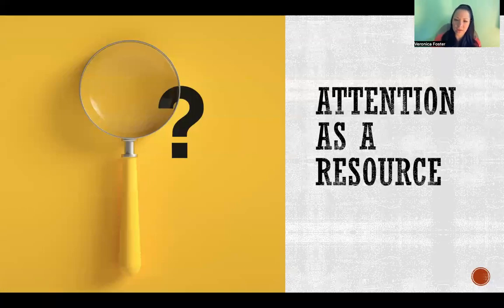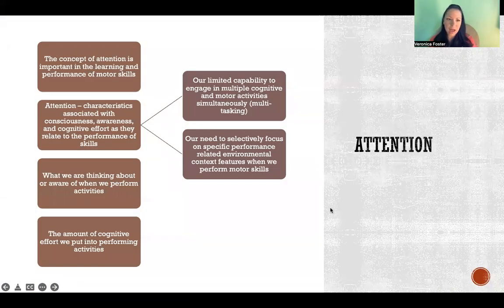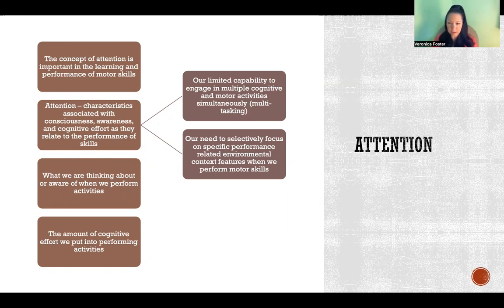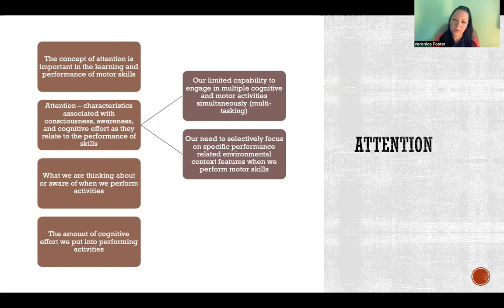In this video I'm going to talk about attention as a resource. Attention as a concept is really important when we're trying to understand learning and performance of motor skills. In the human performance context, attention refers to characteristics associated with consciousness, awareness, and cognitive effort. With attention and motor skills, we're thinking about what we're aware of when we're performing activities and how much cognitive effort we're investing. The idea of attention is really important especially in two contexts: understanding multitasking and the limits on our abilities to perform multiple cognitive and motor activities at the same time, and our need to selectively focus on specific performance-related environmental features when performing motor skills.